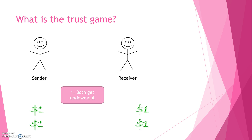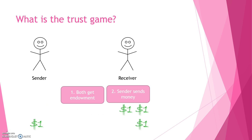Typically it's around $10, but for all purposes, let's just assume it's $2. Thereafter, the sender sends some money to the receiver. The sender can send any amount from $0 up to his or her total endowment.